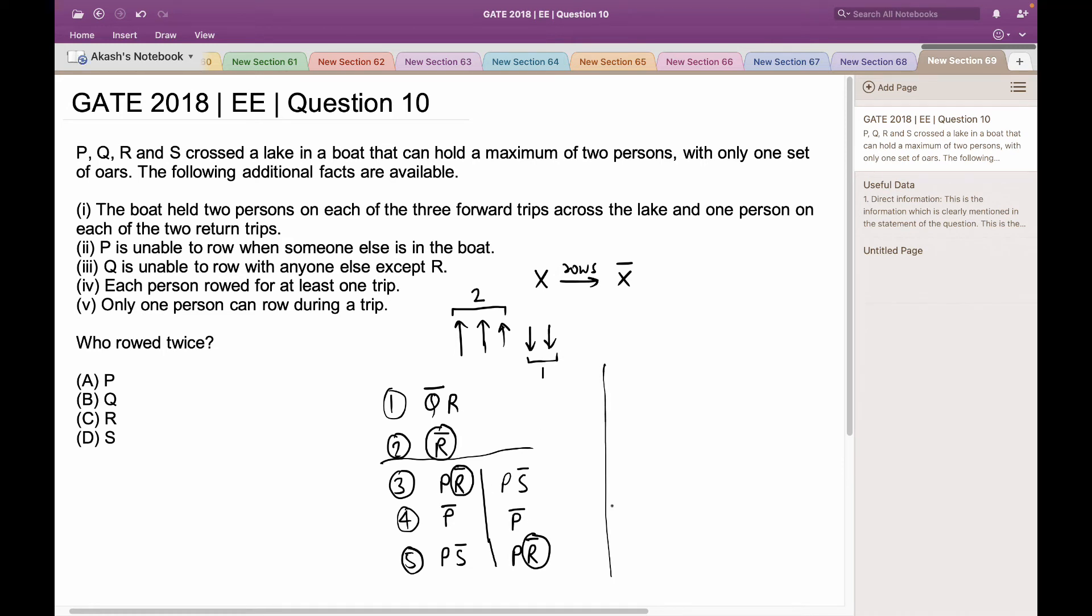Now, let us examine another case, where instead of Q rowing with R, let us take P rowing with S, and obviously, S would be rowing the boat. Now, in the second return trip, P can return with the boat, as taking S during the return trip would leave P with no trip. So we will take P in the return trip. Now, once P is on the other side, we can take Q and R together, with Q rowing the boat.